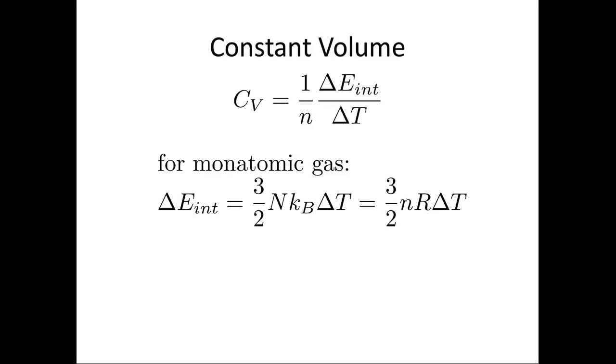Now what we're going to do is substitute in for the change in internal energy. We know for a monatomic gas that the change in internal energy is given by 3 over 2 nKb delta T. Or if we have the number of moles, it's 3 over 2 nR delta T. So now we're just going to substitute this expression into here. And we end up with Cv is equal to 1 over n, 3 over 2 nR. The n's will cancel, giving us 3 over 2 R.